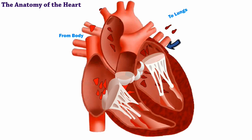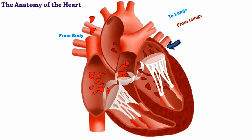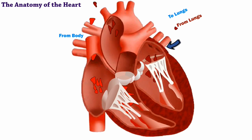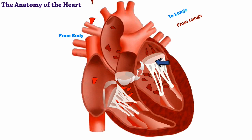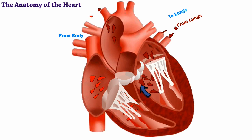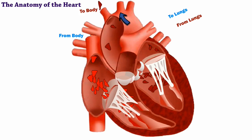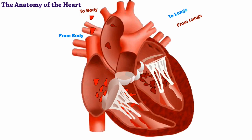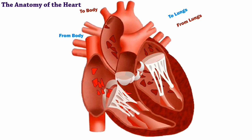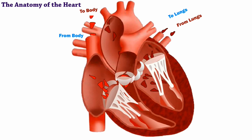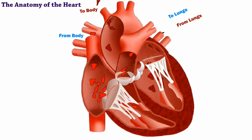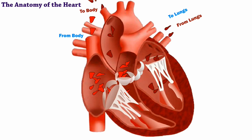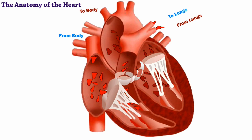After traveling to the lungs, it returns to the heart, oxygen-rich. The blood leaving the left ventricle is heading for the body. This process repeats itself over and over again to effectively deliver oxygen and nutrients to your body.